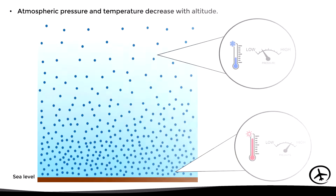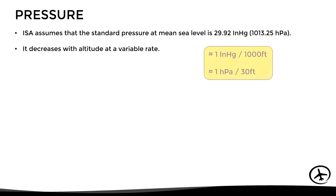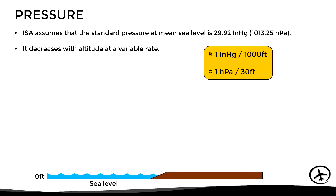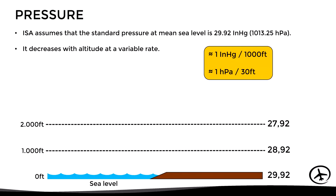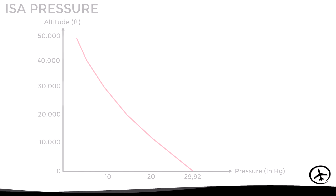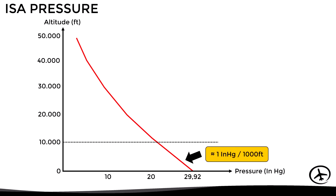Let's now see how the pressure behaves in the ISA atmosphere. It is assumed that the pressure at sea level is 29.92 inches of mercury or 1013 hectopascals, depending on the unit of measurement used. This pressure decreases with altitude at a variable rate; however, we can say that the pressure reduction in the first levels corresponds to approximately 1 inch of mercury per 1000 feet or 1 hectopascal per 30 feet. This means that under standard conditions, at sea level we would have 29.92 inches of mercury, at 1000 feet approximately 28.92, at 2000 feet 27.92, and so on. Up to about 10,000 feet we can experience a reduction of 1 inch of mercury per 1000 feet.